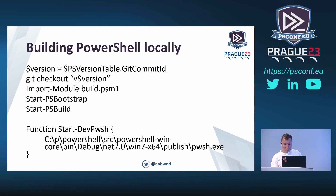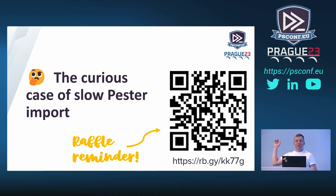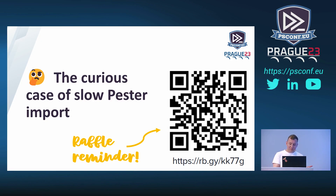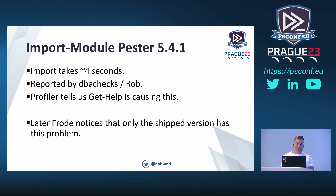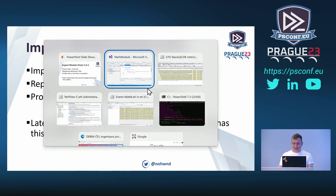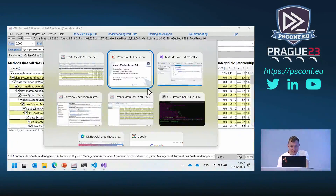Now let's look at the curious case of slow Pester import, reported by DBHX when they were working on their migration to v5. What Profiler told us is that the import takes four seconds and Get-Help is causing it. Get-Help is a built-in binary commandlet and we can't really see into it through Profiler — so we need to apply the same technique. Frode, our other maintainer, also noticed that only the shipped version has this problem, not the locally built development version. Let's repeat all of the same steps.